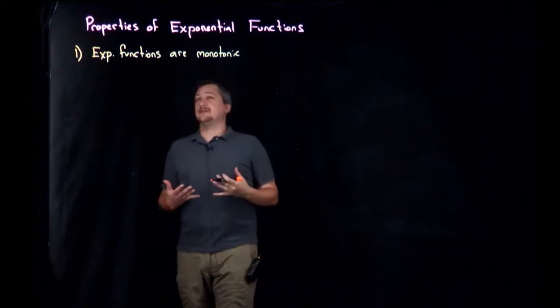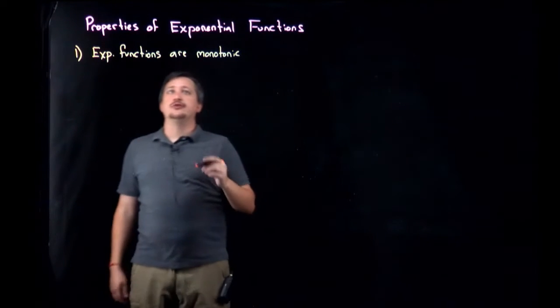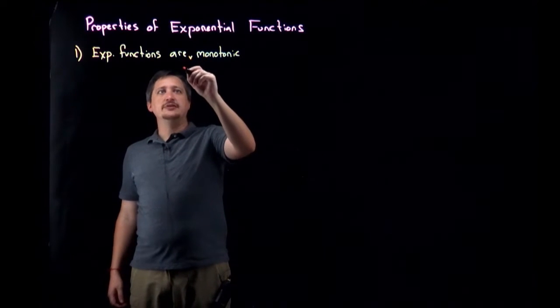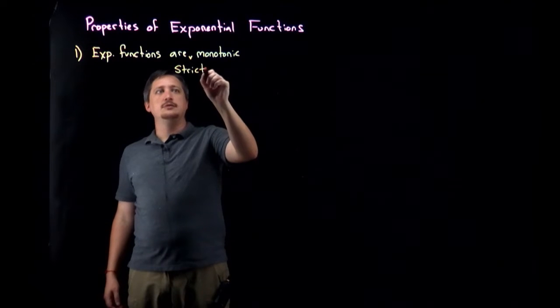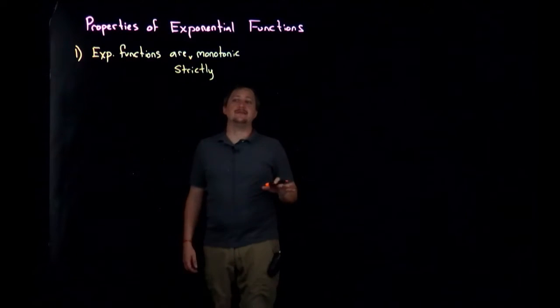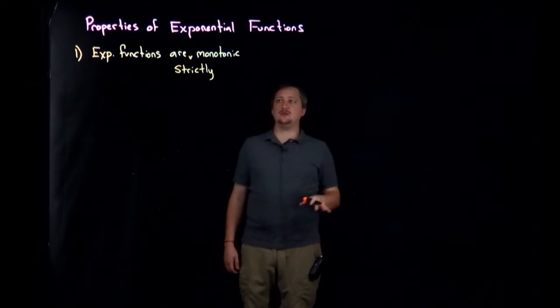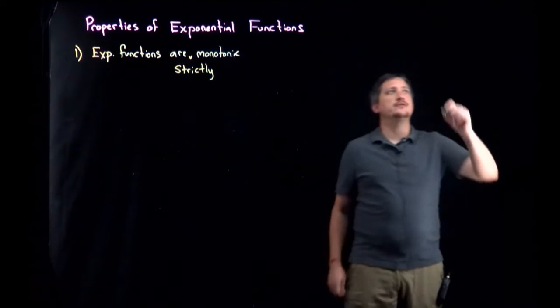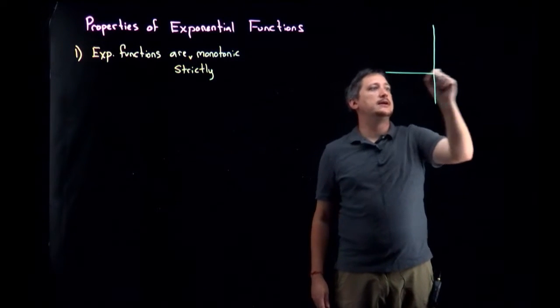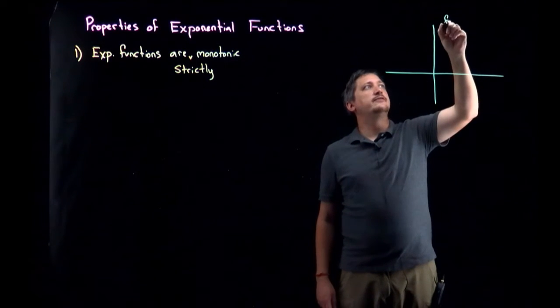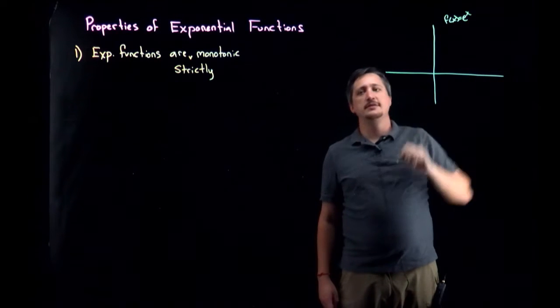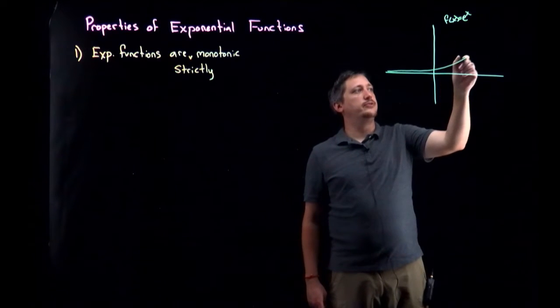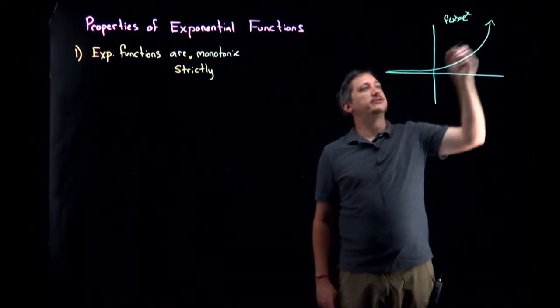And in fact, more importantly for us, exponential functions are - this is not usually put in pre-calc but I'm going to stress this here - they are strictly monotonic, meaning that they're not even flat. There are no two places that equal each other. If we remember, let me draw a quick example over here: something like f(x) = e^x. This thing stayed really close to the graph, to the axis at the bottom, and then sort of takes off.